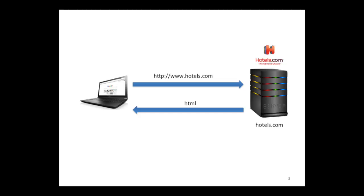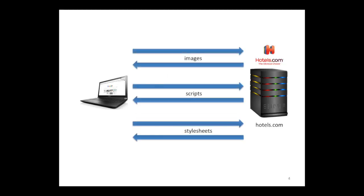This HTML file contains a list of resources — typically images, style sheets, and computer scripts that have to be executed so you can actually see the web page. After you download this initial file, your browser makes several subsequent requests to download the whole web page. You might notice that these requests are mostly going to hotels.com's server — that's the impression people have. But that's actually not the case.